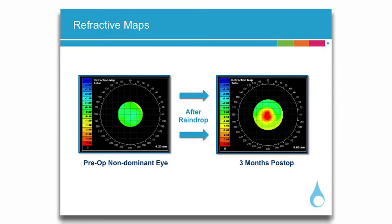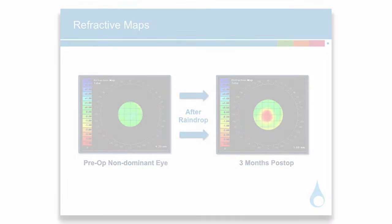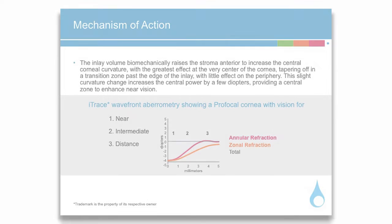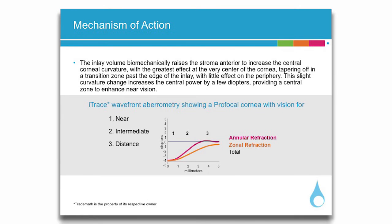These example refractive maps demonstrate the increase in power due to the central corneal steepening created by the Raindrop inlay. The inlay volume biomechanically raises the stroma anteriorly to increase the central corneal curvature, with the greatest effect at the very center of the cornea, tapering off in a transition zone past the edge of the inlay, with little effect on the periphery.